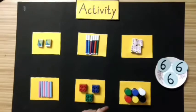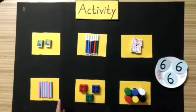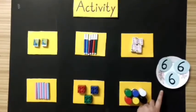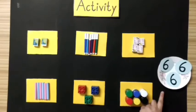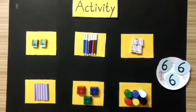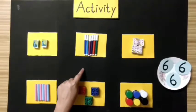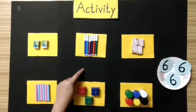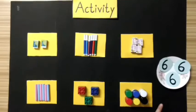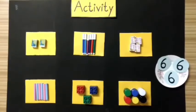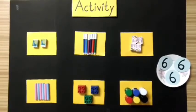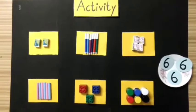Now kids, for better understanding, let's see an activity. Here in this activity I have kept different objects, and on this plate I have kept some flashcards of number 6. In this activity we have to count these objects and keep the number 6 flashcard below objects which are 6 in number. Now kids, let's start this activity.